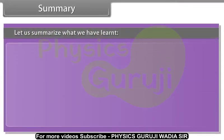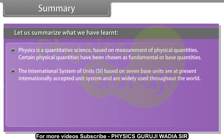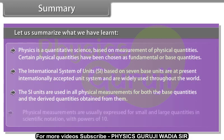Let us summarize what we have learned. Physics is a quantitative science based on measurement of physical quantities. Certain physical quantities have been chosen as fundamental or base quantities. The International System of Units SI based on seven base units are at present internationally accepted unit system and are widely used throughout the world. The SI units are used in all physical measurements for both the base quantities and the derived quantities obtained from them. Physical measurements are usually expressed for small and large quantities in scientific notations with power of ten.